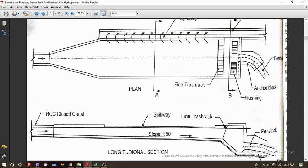So now we can see here this is the plan and the longitudinal section of the forebay. This is the feeder canal where the water from the settling basin comes into the forebay. The excess water is spilled out from this spillway. And unlike settling basin, it has a fine trash rack just before the penstock pressure shaft and there is a provision for flushing also.